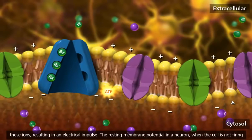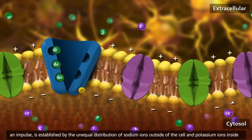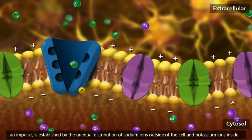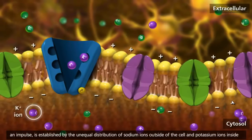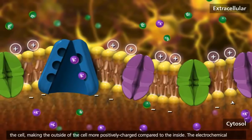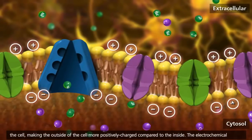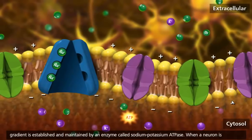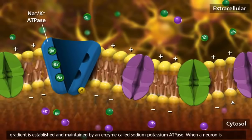The resting membrane potential in a neuron, when the cell is not firing an impulse, is established by the unequal distribution of sodium ions outside of the cell and potassium ions inside the cell, making the outside of the cell more positively charged compared to the inside. The electrochemical gradient is established and maintained by an enzyme called sodium-potassium ATPase.